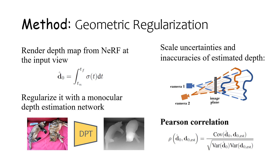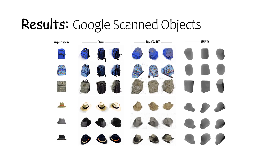Due to the ambiguities of the estimated depth and estimation error, we cannot back-project pixels with depth to 3D and compute the regularization directly. Instead, we maximize the Pearson correlation between the estimated depth map and the NeRF-rendered depth. Here we show our experimental results on in-the-wild images.